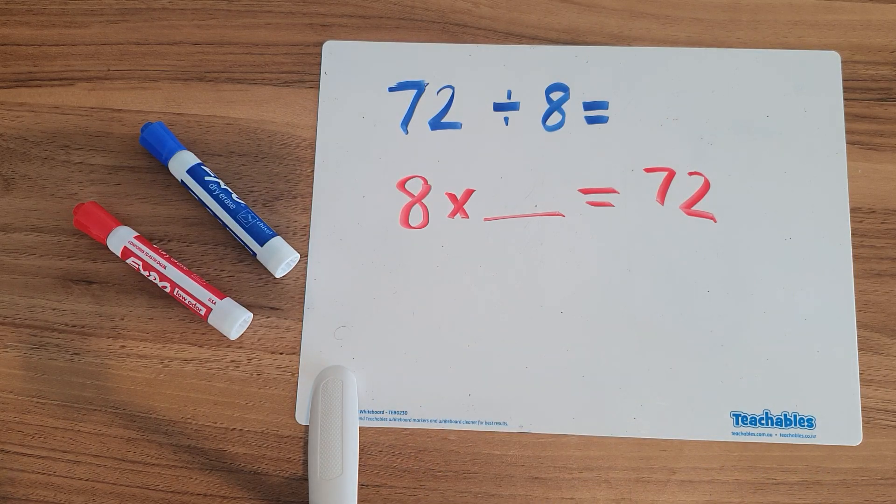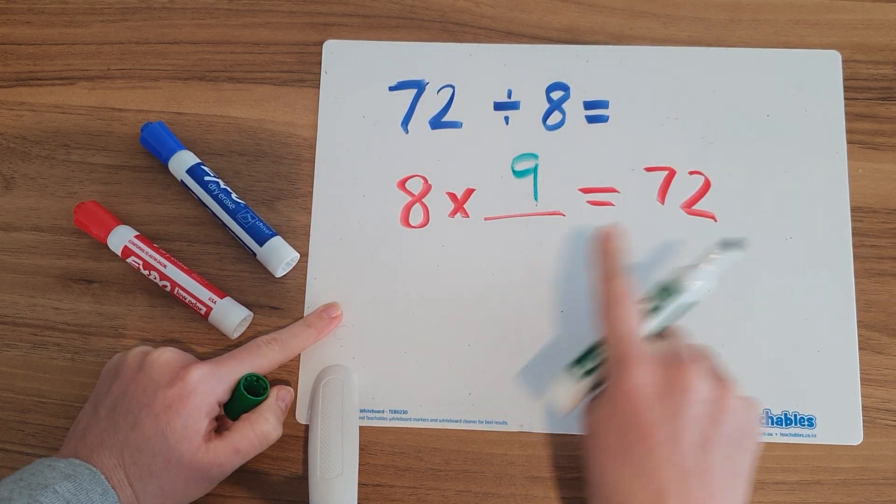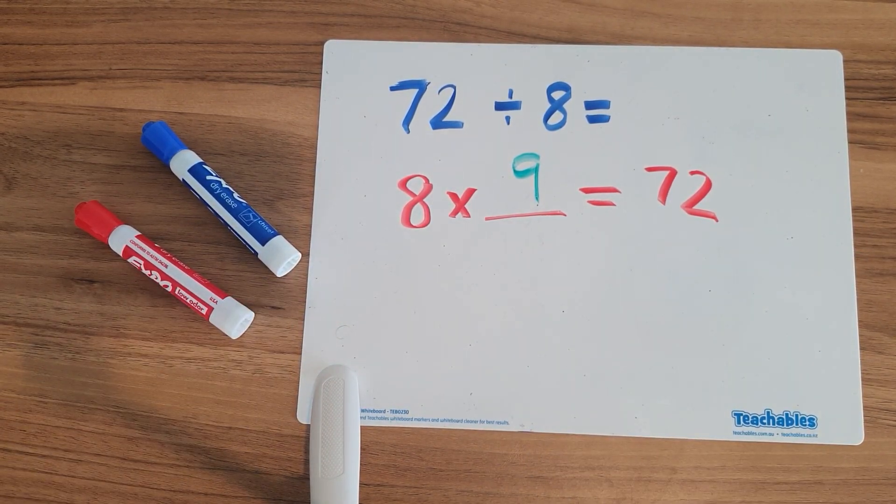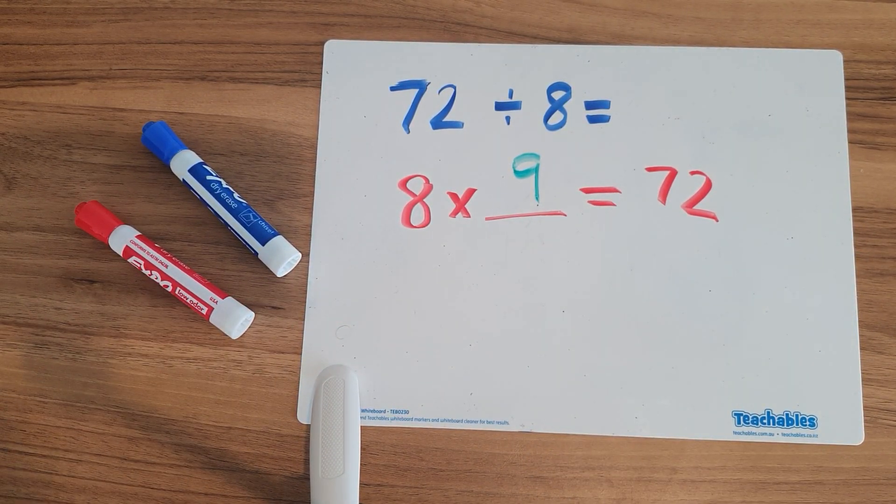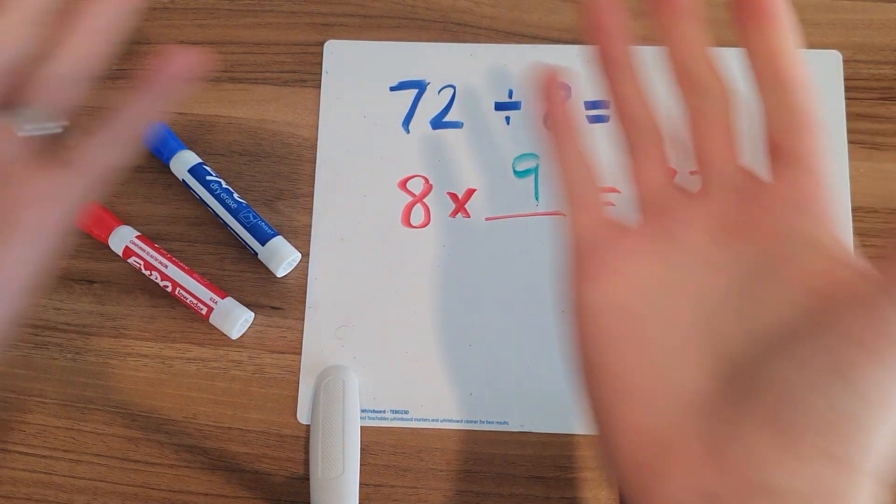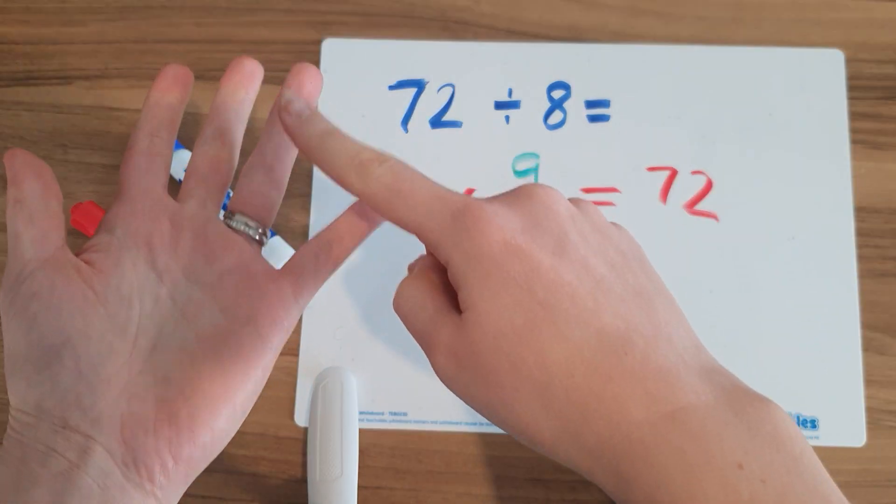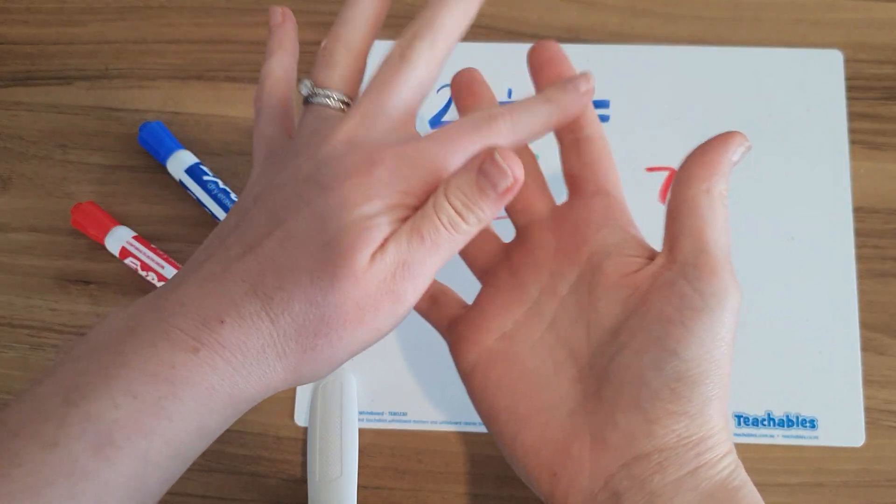So I know that 8 times 9 is going to give me 72. So 8, 9, 72. I can check that because I know my finger trick here. So if I have my fingers 1, 2, 3, 4, 5, 6, 7, 8, 9, 10.